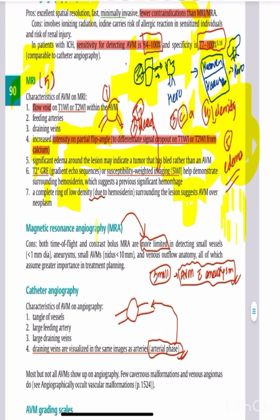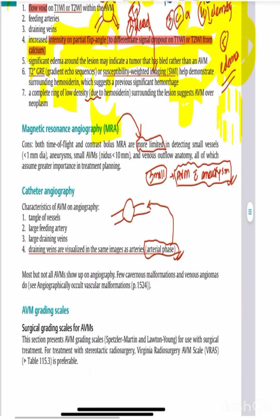MRI shows the features of AVMs. Catheter angiography is the gold standard, showing a tangle of vessels.